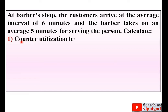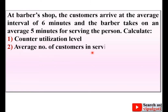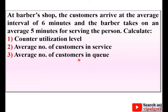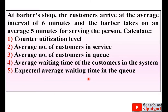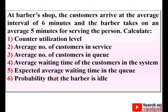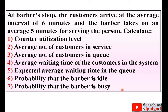We need to calculate: first, the counter utilization level; second, the average number of customers in service; third, the average number of customers in the queue; fourth, the average waiting time of the customer in the system; fifth, the expected average waiting time in the queue; and finally, the probability that the barber is idle and the probability that the barber is busy.